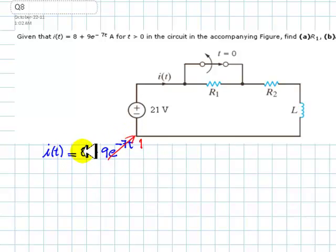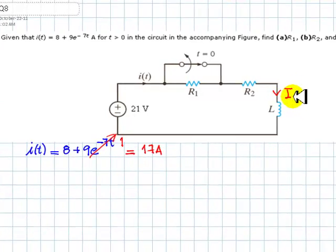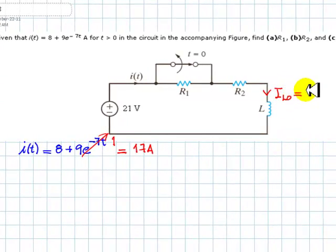So the current value is 8 plus 9 that is 17A. 17A is the current in this circuit, the current in the inductor at t equals 0 that is iL0, 17A.